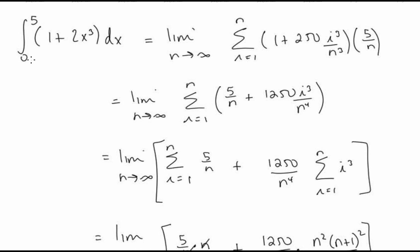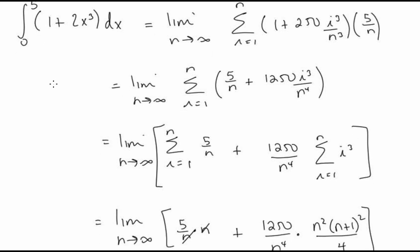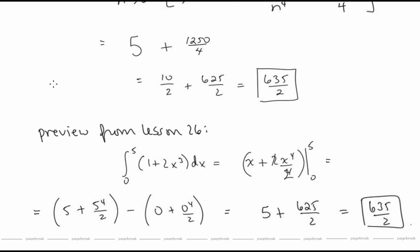It just so happens that for the interval 0 to 5, the function 1 plus 2x to the third is greater than or equal to 0, so this also represents the area under the curve over this interval. We can check our work using the antiderivative: x plus 2x to the fourth over 4, simplified to x plus x to the fourth over 2. Plugging in 5 and 0 and subtracting gives the same answer of 635 over 2.